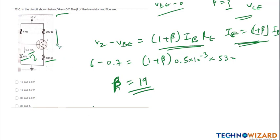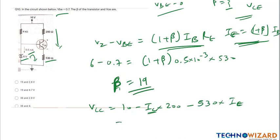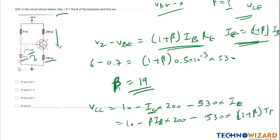Applying KVL in the outer loop: VCE equals VCC minus beta times IB times RC minus 530 times (1 plus beta) times IB. Substituting VCC equals 10, RC equals 200 ohm, beta equals 19, IB equals 0.5 milliampere, VCE comes out to be 2.8 volt. Option A is the correct answer.